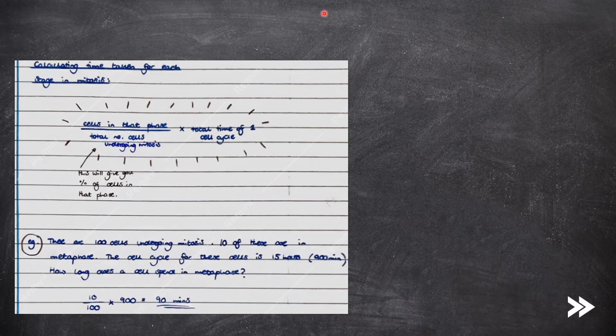In an exam, you may be asked to do a few calculations in relation to either mitosis or the cell cycle. For example, calculate the time taken for each stage in mitosis, which is a common question. To do this, simply divide the number of cells in that phase by the total number of cells undergoing mitosis, which will give you the proportion of cells in that phase. Then multiply this by the total time taken for one cell cycle.